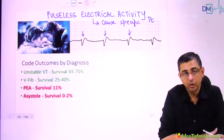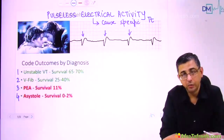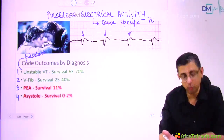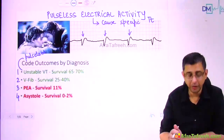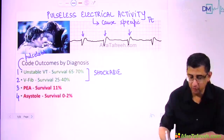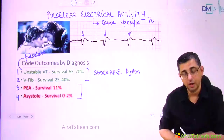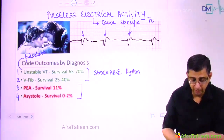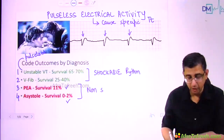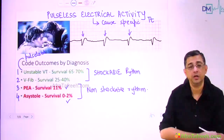When it comes to outcomes by diagnosis in code blue, four rhythms are to be remembered: unstable ventricular tachycardia, ventricular fibrillation — both shockable rhythms shown in green because survival chances are superior. In pulseless electrical activity, the survival rate is a mere 11 percent; in asystole it is a mere 2 percent. PEA and asystole are non-shockable rhythms, and the mortality rates are definitely higher for these two conditions.